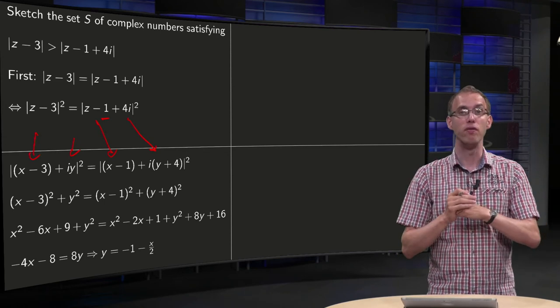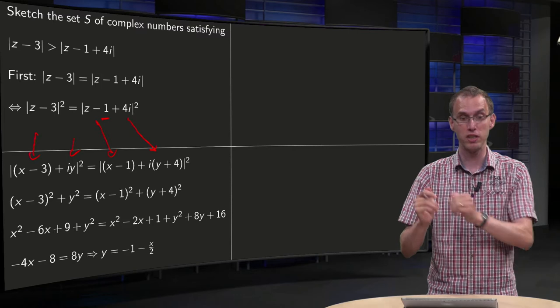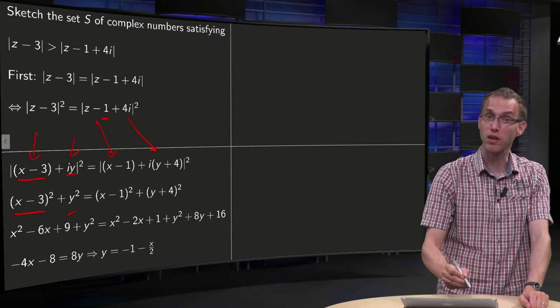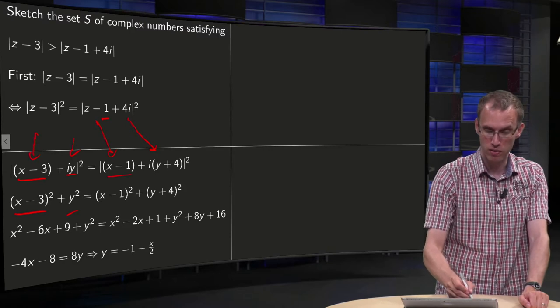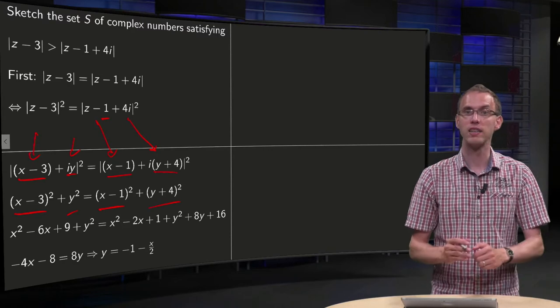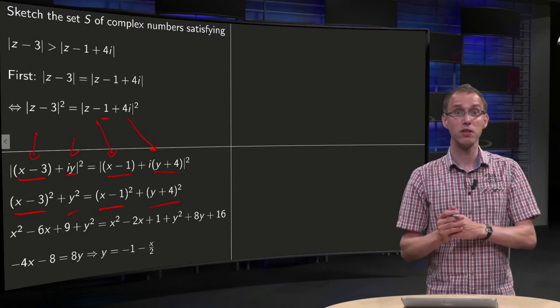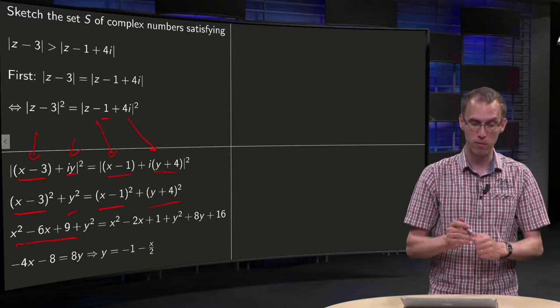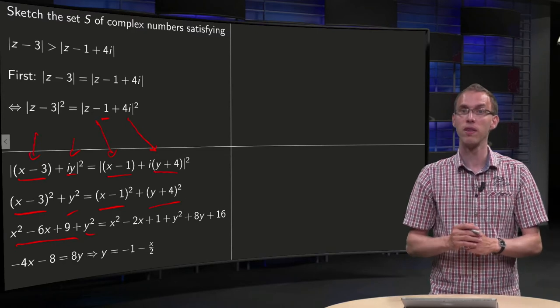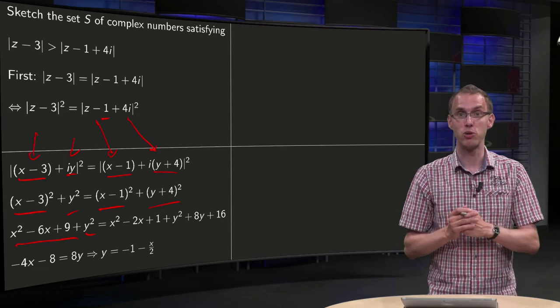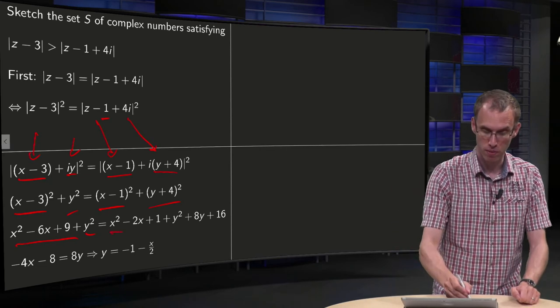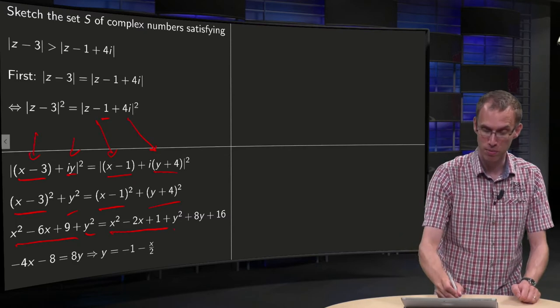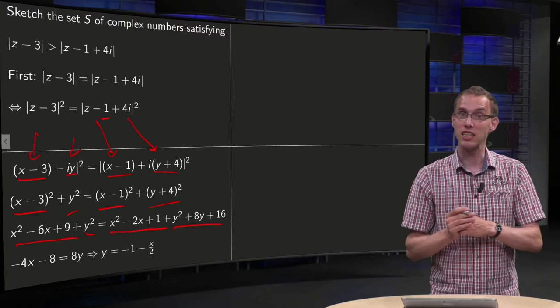The norm of a complex number squared equals the real part squared plus imaginary part squared, so we get (x - 3)² + y² equals (x - 1)² + (y + 4)². Working out the brackets, you get x² - 6x + 9 + y² on the left, equals x² - 2x + 1 + y² + 8y + 16 on the right.